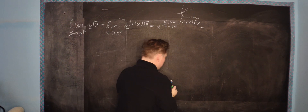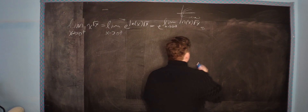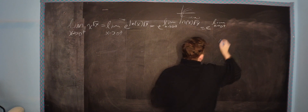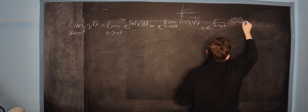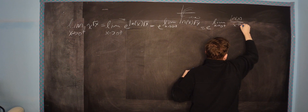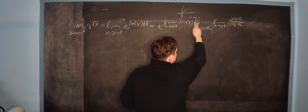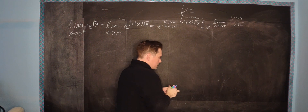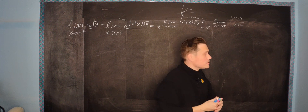So what you can do is apply a common trick, which is to rewrite using a property of fractions. You're going to have e raised to the limit as x approaches 0 from the right side, and then ln of x divided by x to the negative 1 half. That's an allowed property: the square root of x is x to the positive 1 half, which is equivalent to writing x to the negative 1 half in the denominator of a fraction.